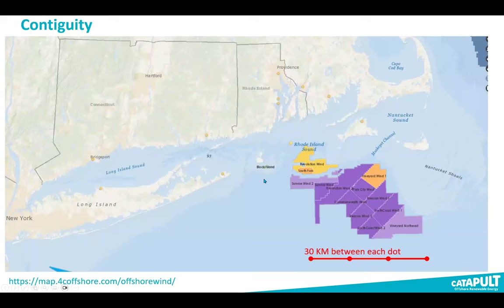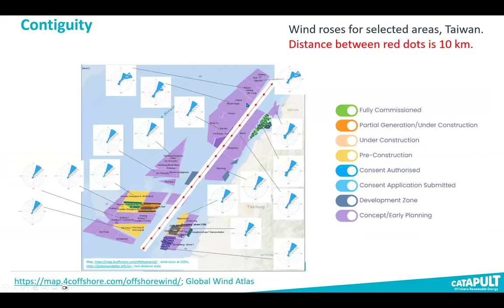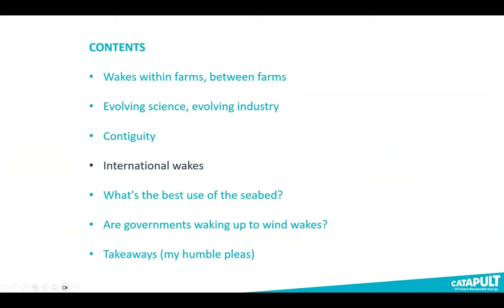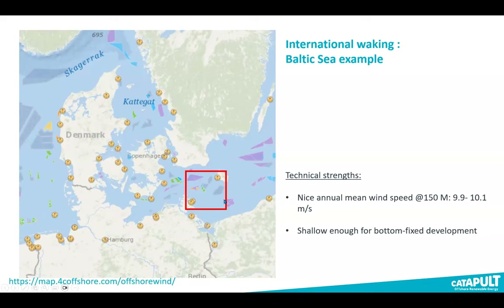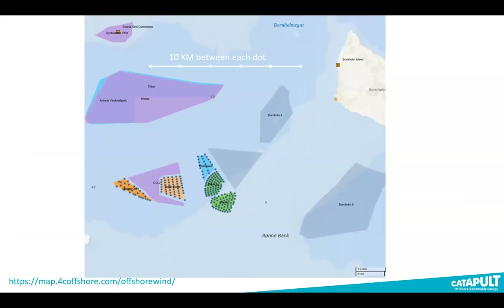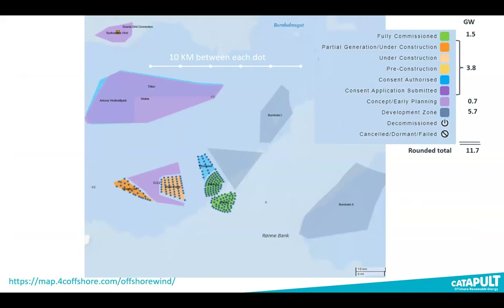In the US Northeast, the planned density of wind farms is lower than across the pond, which could help mitigate wake losses. In Taiwan, farms are right up against each other. From a technical point of view the real estate is quite cozy, and there are significant wake implications if they were all built — including transboundary issues, which Eric will drill down on.